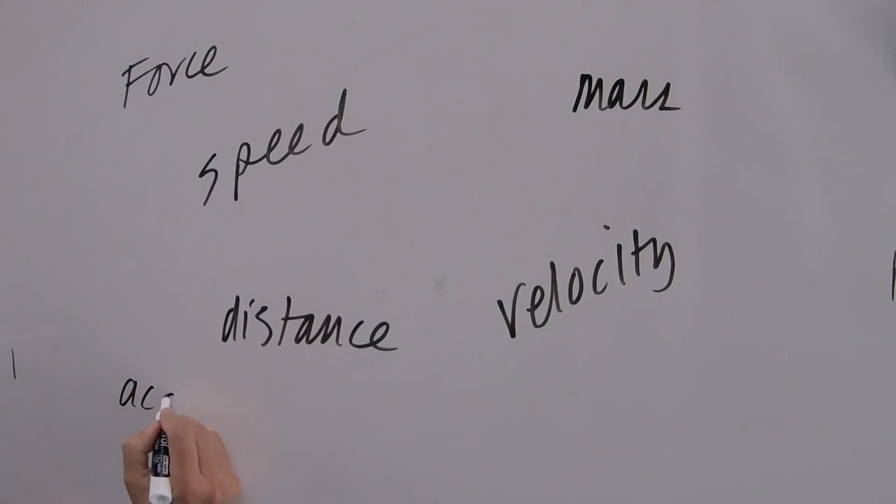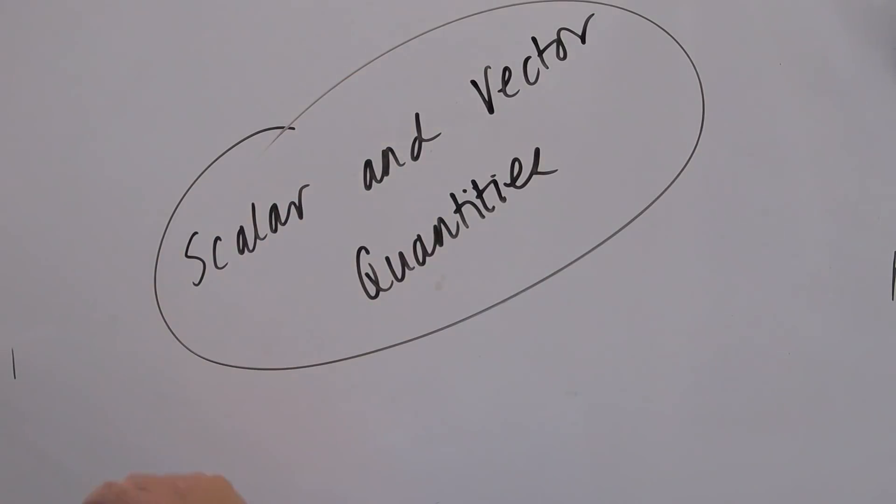So that's all there is to scalar and vector quantities. Lesson one is done. You know how to define a scalar, define a vector, examples of scalars, examples of vectors, and you know how to draw scale diagrams of vector quantities, like speed, velocity, and force.